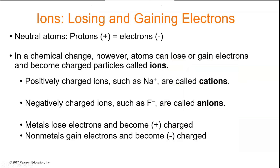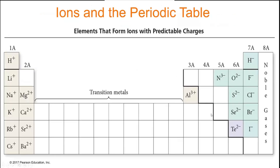Ions are formed when an atom loses or gains electrons, acquiring a positive or negative charge. Key rule: metals lose electrons and become positively charged cations; non-metals gain electrons and become negatively charged anions. Some specific charges to know: phosphorus is −3, zinc is +2 (even though it's in the transition metals, it has only one charge state), and silver is +1.